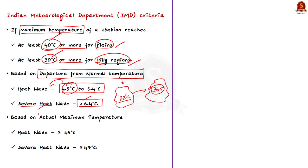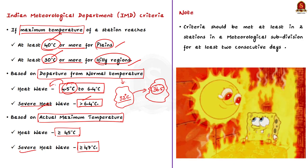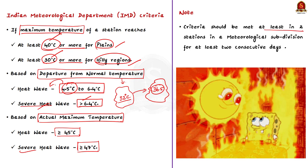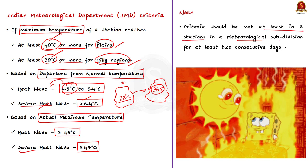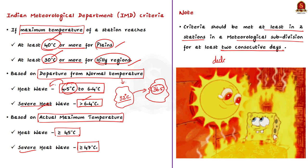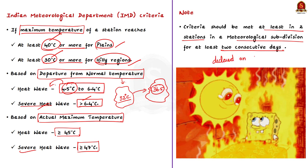One more criteria is based on actual maximum temperature. A heat wave is declared when actual maximum temperature is equal to or greater than 45 degrees Celsius, and a severe heat wave is declared when actual maximum temperature is equal to or more than 47 degrees Celsius. Importantly, to declare a heat wave, the above criteria should be met in at least two stations in a meteorological subdivision for at least two consecutive days, and the heat wave will be declared on the second day.